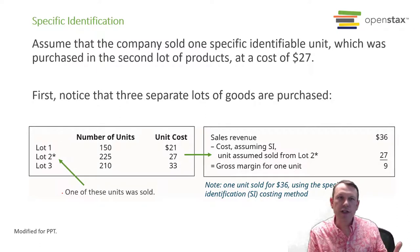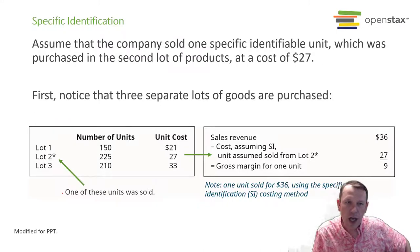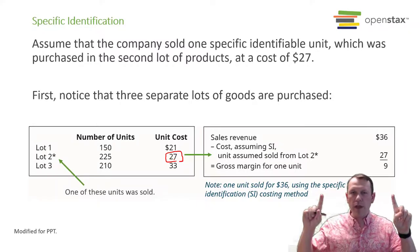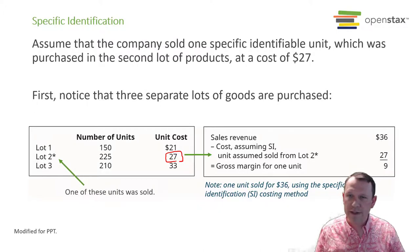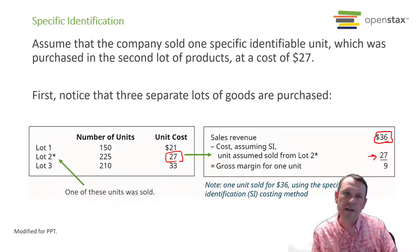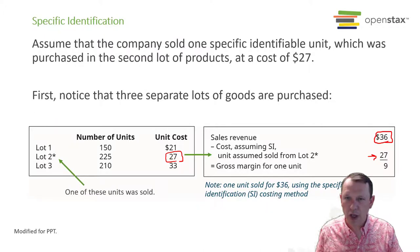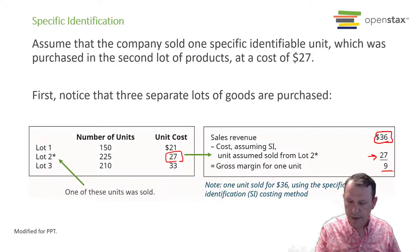For specific identification, they're able to know exactly — they sell one unit out of lot number two. The unit cost to get into inventory is $27 — this is the cost, not the sales price. The sales price is $36, which goes toward our revenue. Our cost of goods sold and the adjustment to inventory is $27 — that's the cost of the item in inventory. We track inventory according to what it costs us, not the sales price. Our revenue minus cost is our margin: $9 for specific identification.